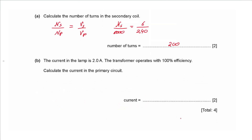Part b: the current in the lamp is 2.0 A and the transformer operates at 100% efficiency, so power input equals power output. Using V×I (secondary) = V×I (primary): 6 × 2 = 240 × Ip, so Ip = 12 ÷ 240 = 0.05 A. This was the end of the paper — I hope you enjoyed this video and found it useful. Keep practicing and I will see you in another video.